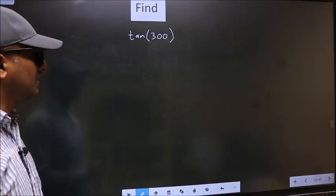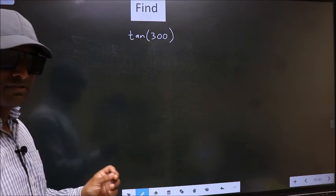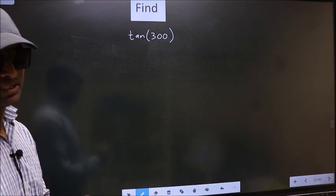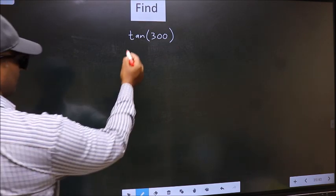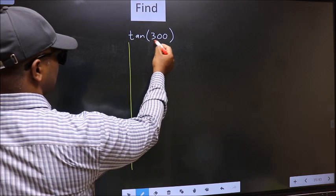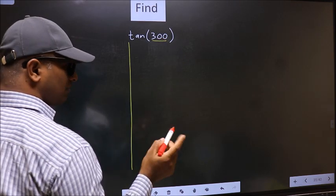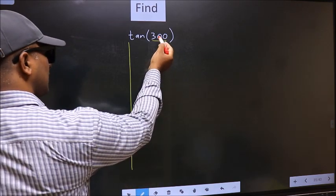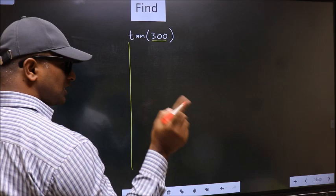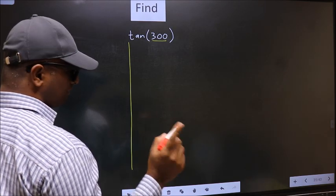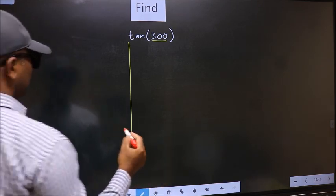To find tan(300), we should follow this method. Here we have 300. Now we should check: 300 lies between which two multiples of 180? What I mean is...